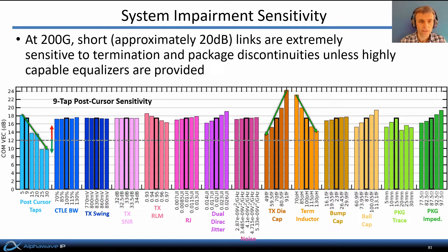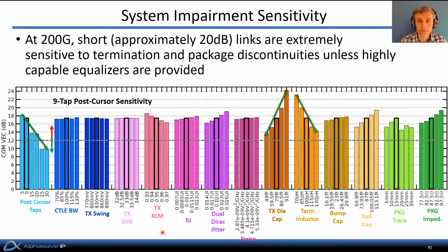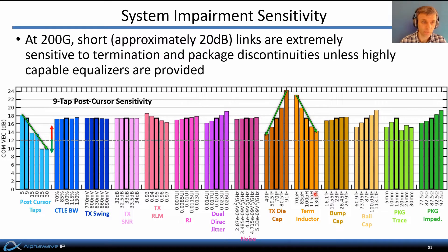Here we see an analysis of 200 Gbps system performance for a channel with modest loss, about 20 dB at Nyquist. The severity of various transceiver impairments are swept individually to assess which impairments the link is most sensitive to. Among all these different transceiver impairments, we see the system is by far the most sensitive to the number of equalizer taps and the severity of discontinuities at either end of the link — the TX die-cap termination inductance — which give rise to reflections.